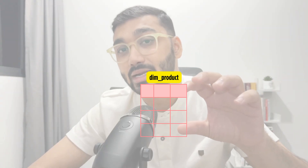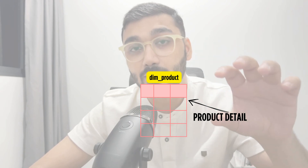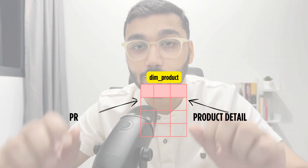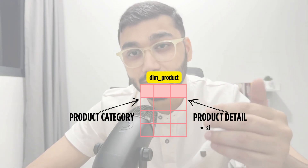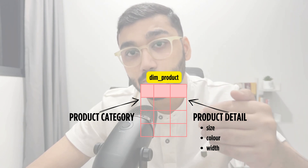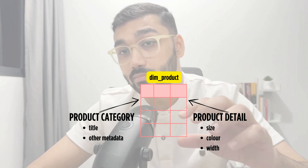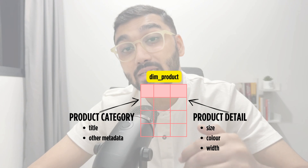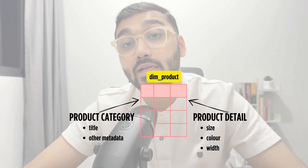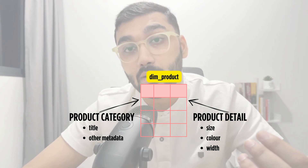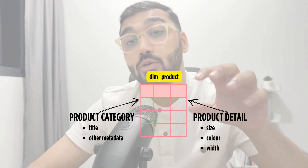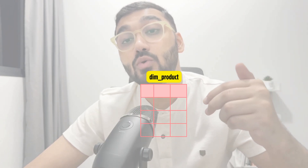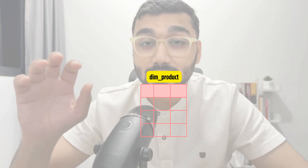For example, the dim_product table might have two kinds of information: product details (size, color, weight) and product category information (title, subcategory, and other metadata). In a star schema, both are clubbed into one dim_product table. But in a snowflake schema, there are two separate tables: dim_product for all the product details, and dim_product_category to store the category title and related metadata.